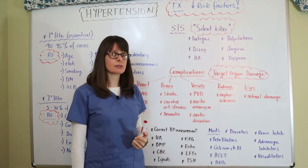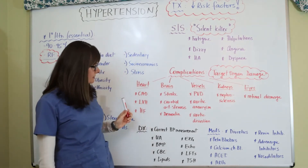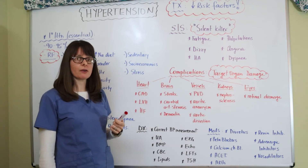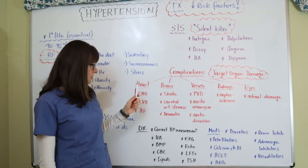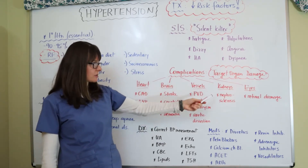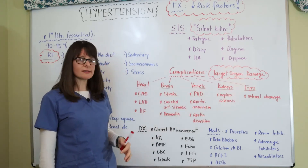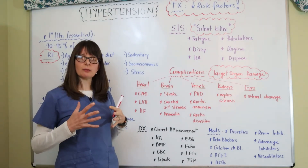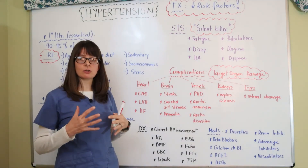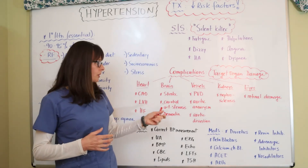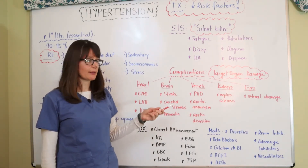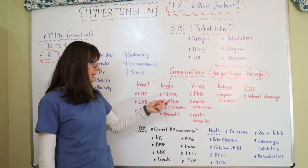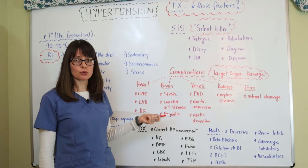When we talk about complications, we talk about target organ damage or end organ damage. It affects the body in many different ways and in most of the very important organs — the heart, brain, blood vessels, kidneys, and eyes — because high blood pressure is an elevation in pressure throughout all the blood vessels in the body. Many times the patient doesn't know they have high blood pressure until one of these serious complications occurs.